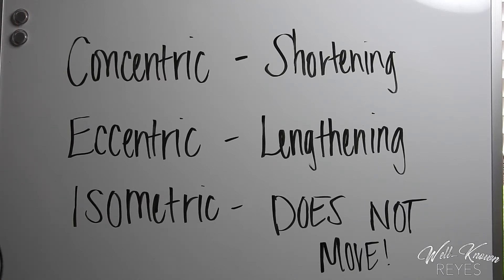Alright, take three. Three is my lucky number. I want to explain the difference between concentric, eccentric, and isometric contractions.